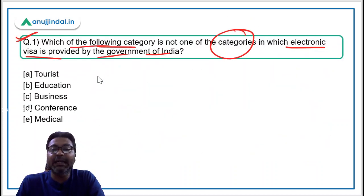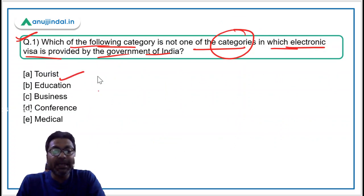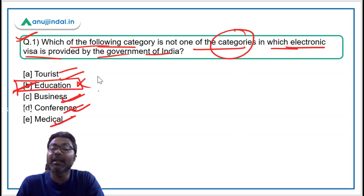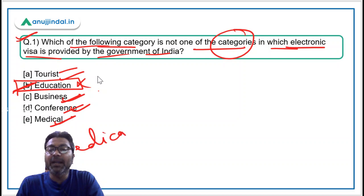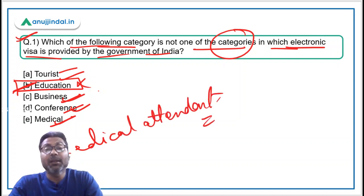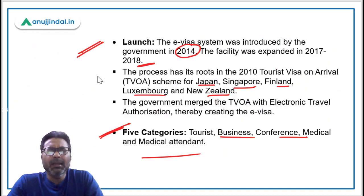Now for the answer to question one: tourist is a category, business is there, conference is there, medical is there — but education is not a category. So option B is the correct answer. The five categories under which e-visas are provided by the government of India are: tourist, business, conference, medical, and medical attendance.